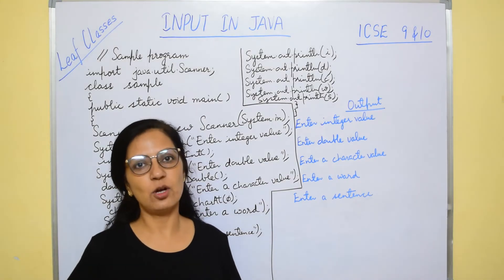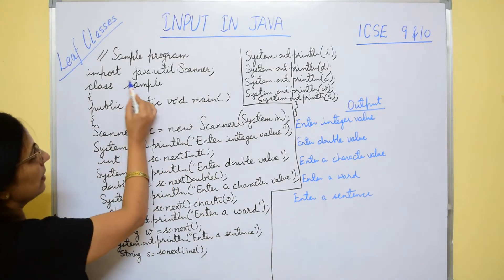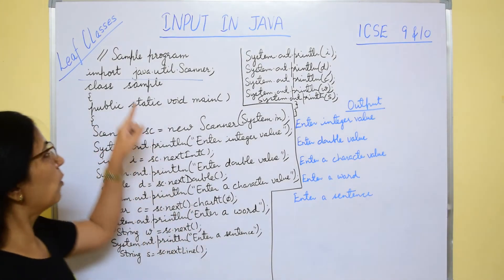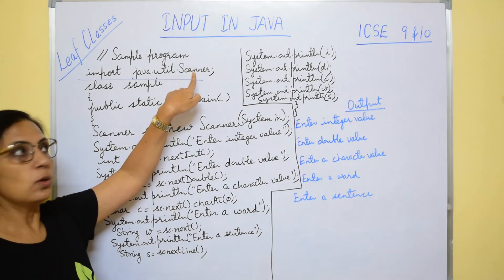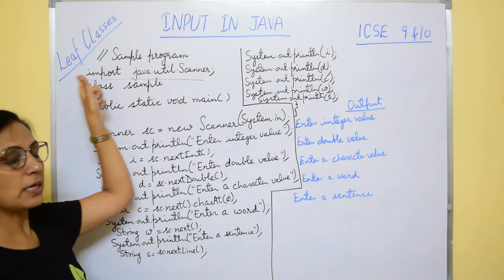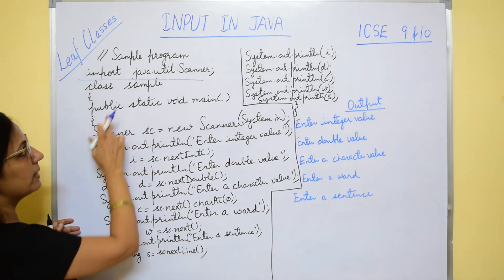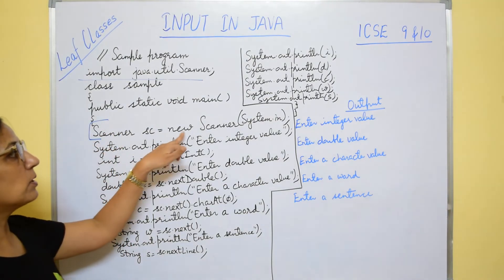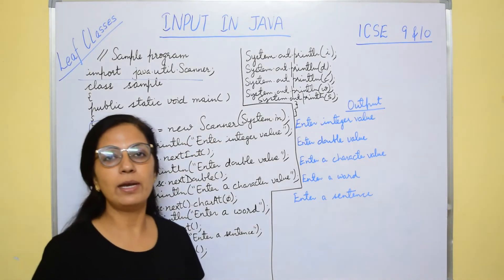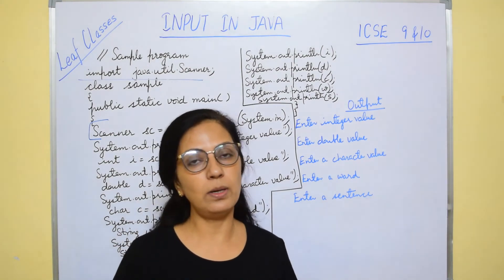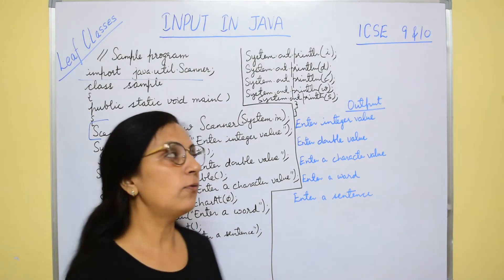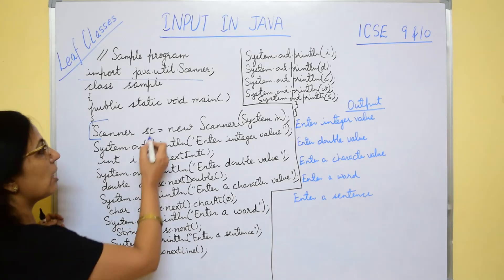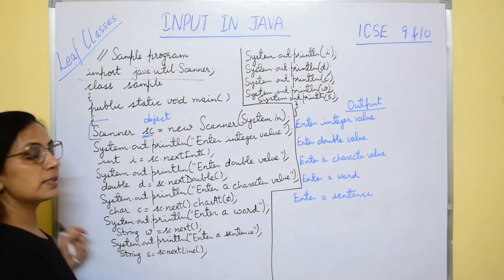Let us take an example to understand the functions of Scanner class. First, the import statement: import java.util.Scanner — this allows the program to use Scanner class functions. Then we start the program with the class name 'Sample' and the main function. Now this statement: Scanner sc = new Scanner(System.in). Functions can only be called through an object of the class. So to create an object of Scanner class, we write: Scanner sc = new Scanner(System.in). Here 'sc' is the object name — you can write ob, n, xyz, abc — anything. But 'Scanner', 'new Scanner', and 'System.in' remain the same.